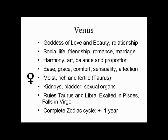Venus is just a little bit further out from the Sun than Mercury, so like Mercury, Venus also has a very similar cycle to the Sun. Venus is never more than two signs from the Sun — never more than about 48 degrees from it, whereas Mercury is never more than 28 degrees from the Sun. Venus can only be in the same sign as your Sun sign or in two signs on either side of your Sun sign.